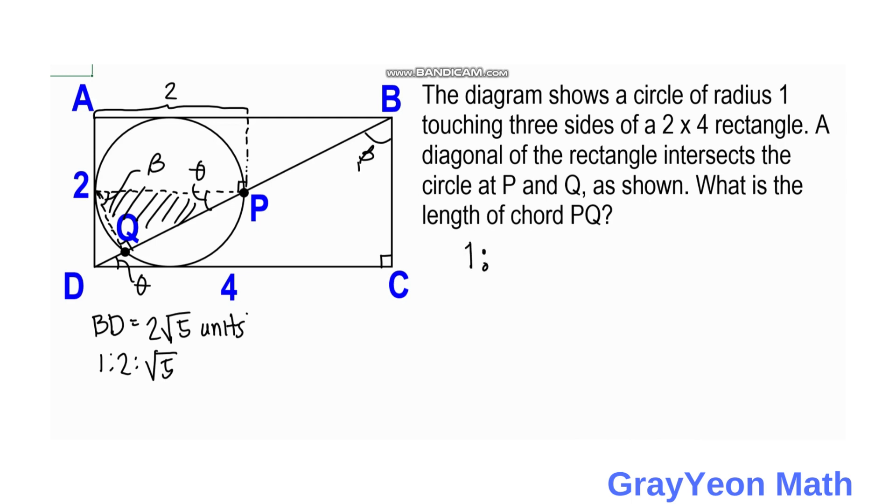We have 1 is to 2 is to root 5. Since we are actually looking for PQ, which is the longer length, and actually for this smaller right triangle, we already know the hypotenuse, which is 2, the diameter of the circle. So we are actually finding this leg, the longer length of the smaller right triangle. So we can equate this, because the right triangles are similar.